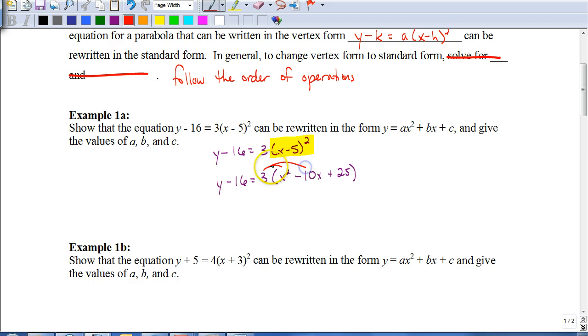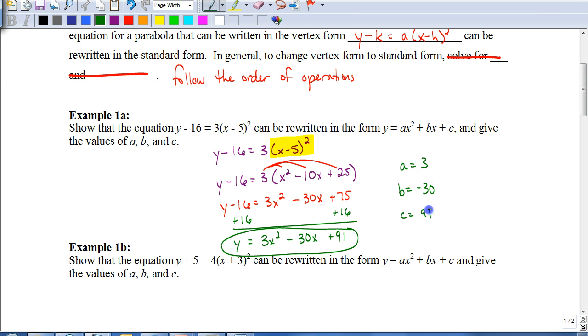Now, I can distribute, because now the next step in the order of operations is to multiply or divide. So, I'm going to multiply everything in parentheses by 3. So, I get y minus 16 equals 3x squared minus 30x plus 75. And lastly, in my order of operations, it says to add or subtract. So, I'm going to add 16 to both sides. So, I get y equals 3x squared minus 30x plus 91. And as far as identifying my values for a, b, and c, a would equal 3, b would equal negative 30, and c will equal 91.